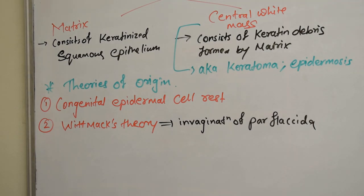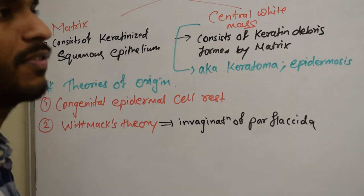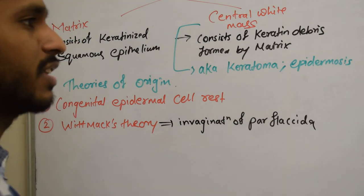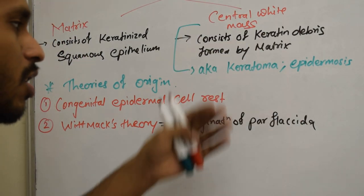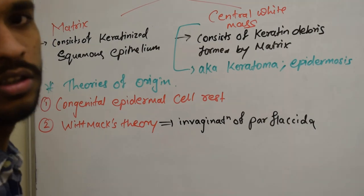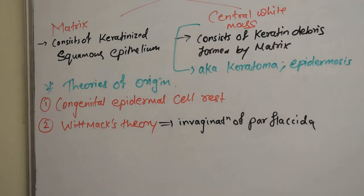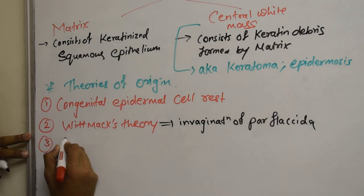Invagination means when something is growing inside first and then going outward — inside out — or taking a U-turn along itself. So the Wittmaack theory says that Cholesteatoma occurs due to invagination of the pars flaccida. Then we have Habermann's theory, which says that Cholesteatoma occurs due to epithelium invagination.